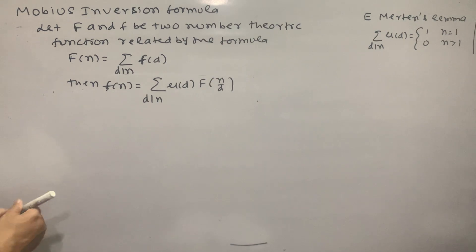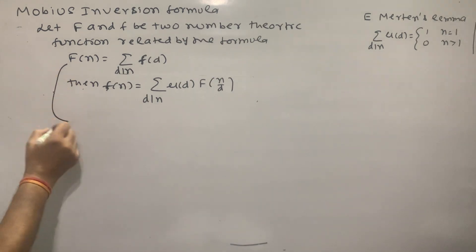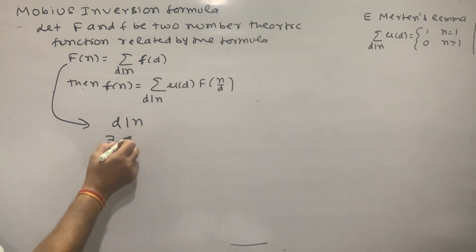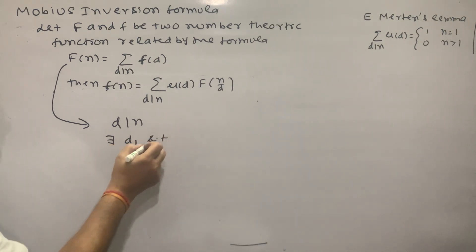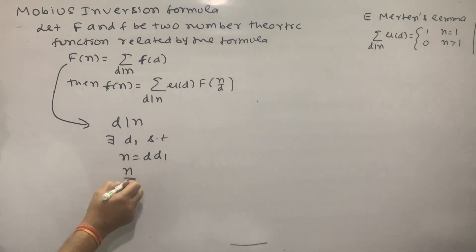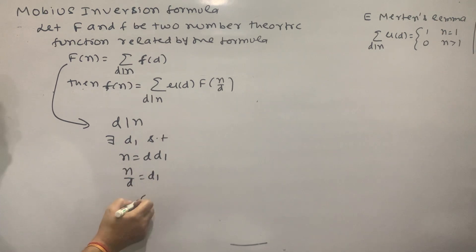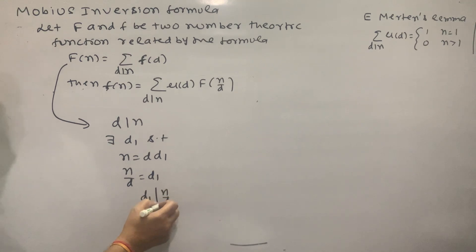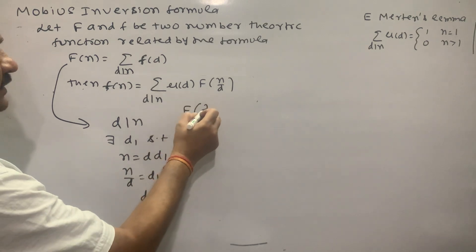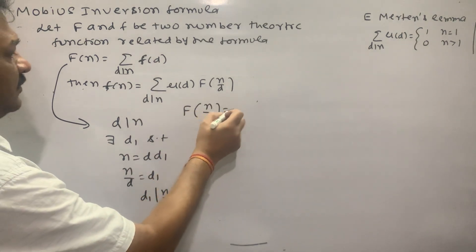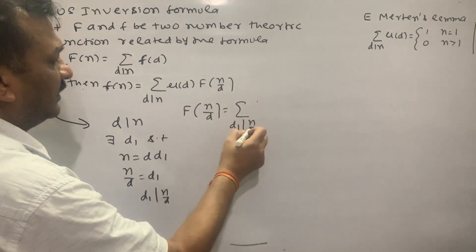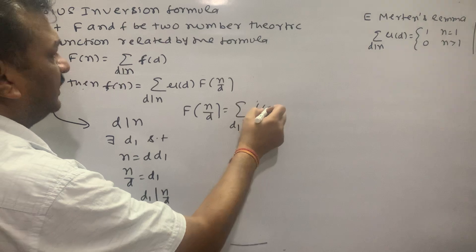First, since d divides n, there exists d₁ such that n equals d times d₁. So n upon d equals d₁, and then d₁ divides n upon d. So here we see F(n/d) equal to summation over d₁ dividing n/d of f(d₁).